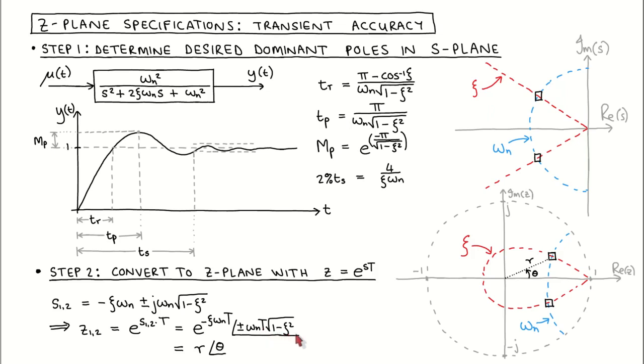If we call them magnitude r and angle theta, we can visualize these poles on the z-plane as complex numbers with magnitude r and angle theta. These poles now lie at the intersection of the red spiral, which is the constant damping curve, and the blue constant natural frequency curve.